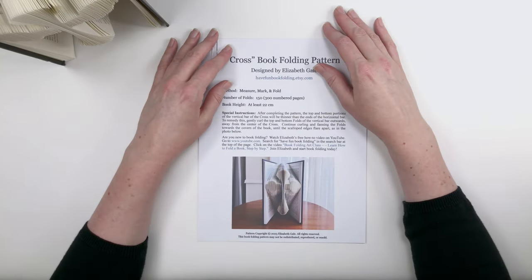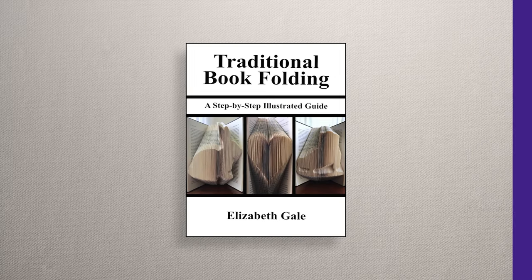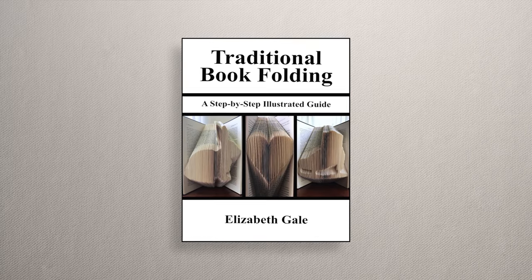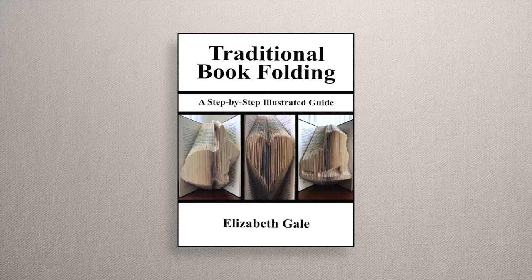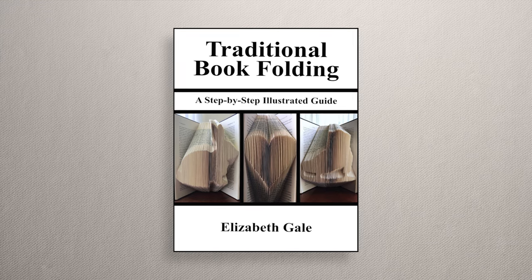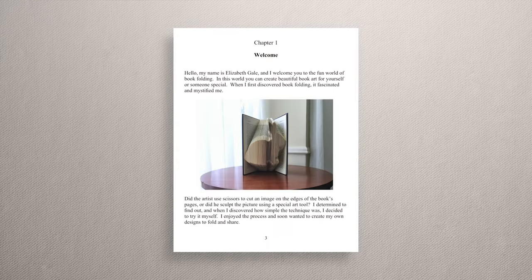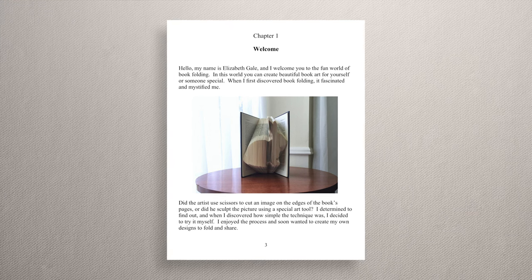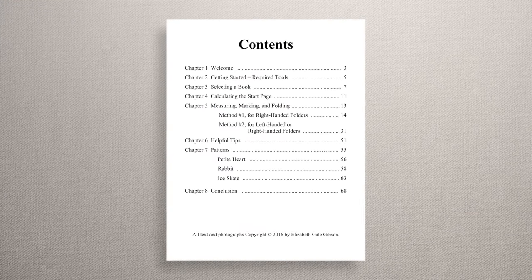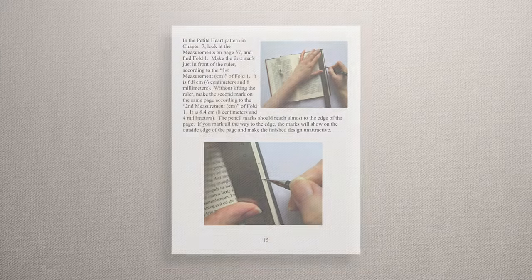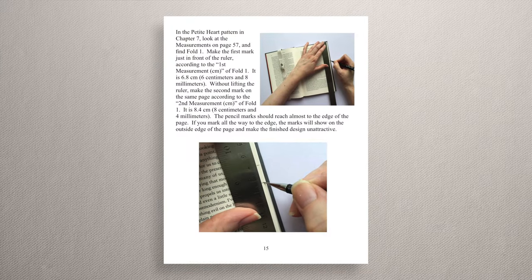When you order the cross pattern, you'll also receive a free PDF file of my ebook. It's called Traditional Book Folding, a Step-by-Step Illustrated Guide. If you're a beginner, this how-to guide is perfect for you. It's 68 pages long and it has lots of clear photos in it that you can follow.